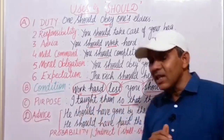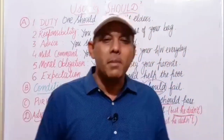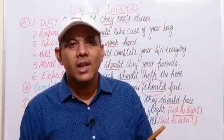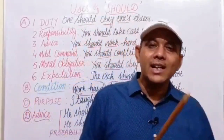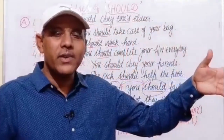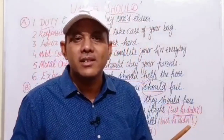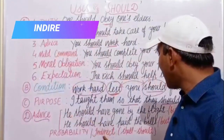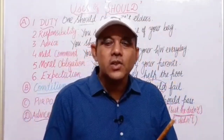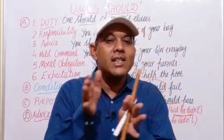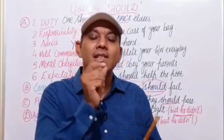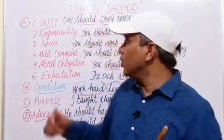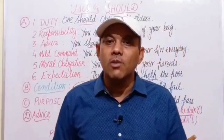The last use of should is probability. For example, if I know that my friend goes to the library every evening and someone asks me where he is, I can say: he should be in the library now. Next is indirect speech — when 'shall' is used in direct speech, we change it to 'should' in reported speech. Next, we shall discuss the use of would.